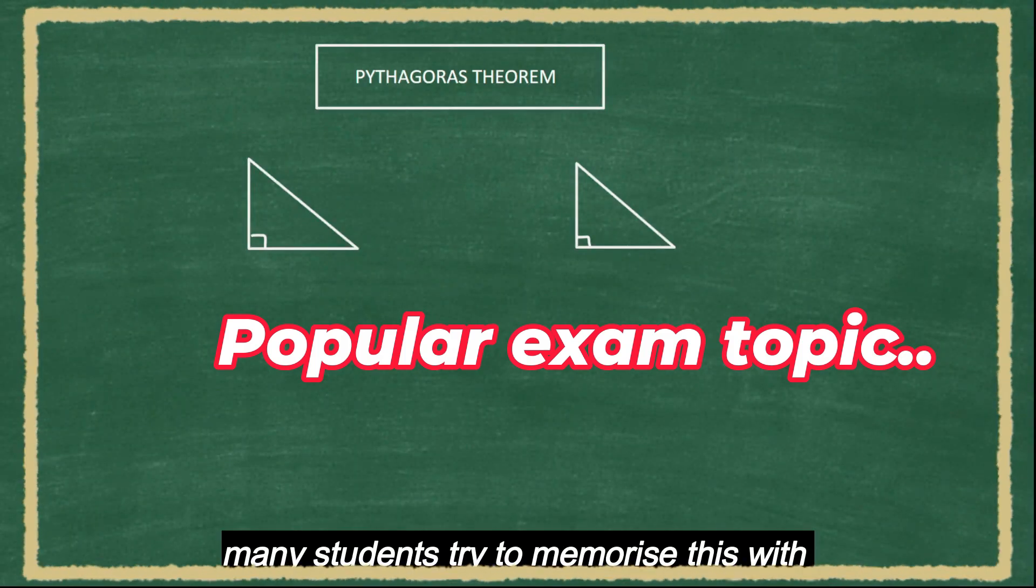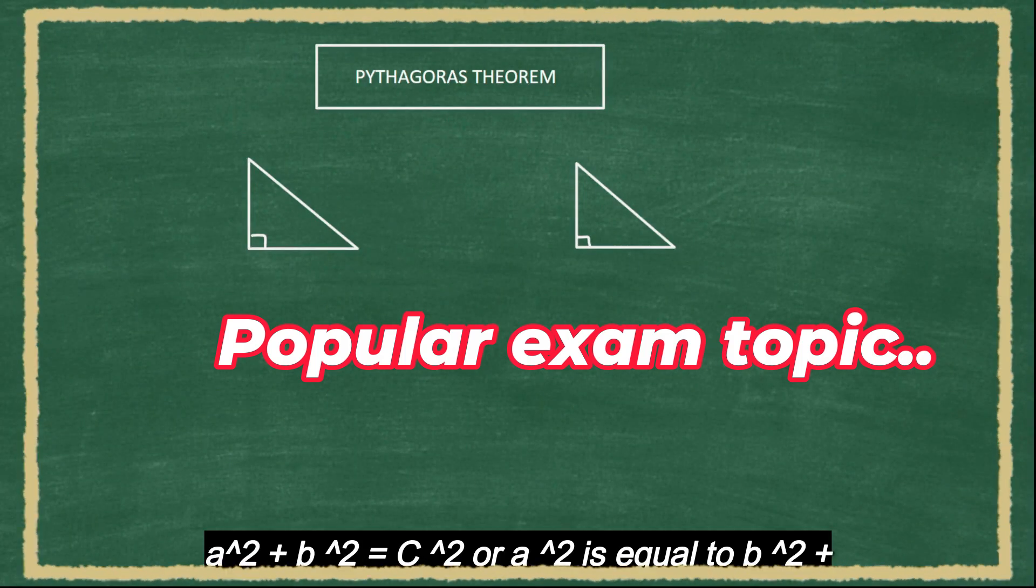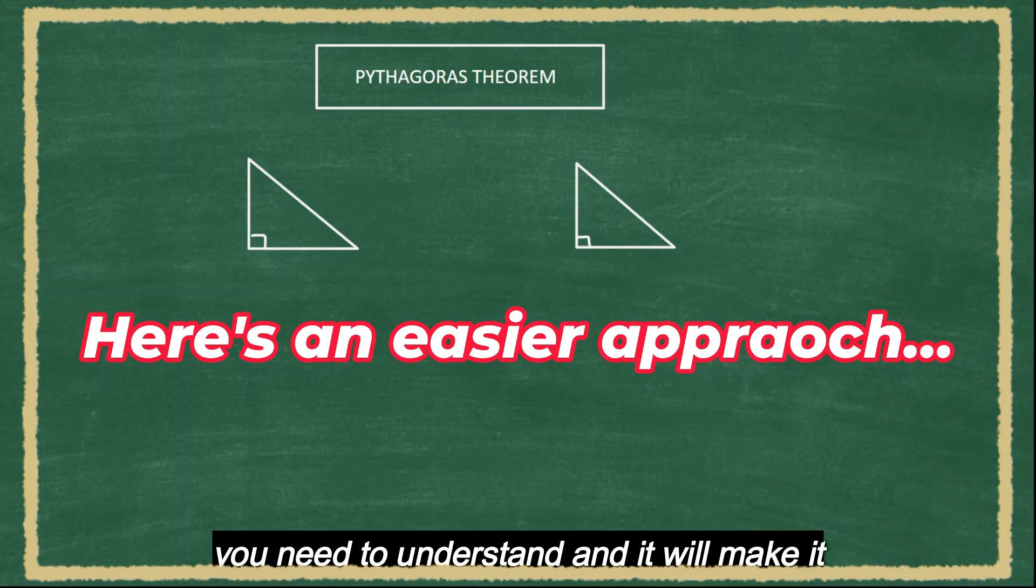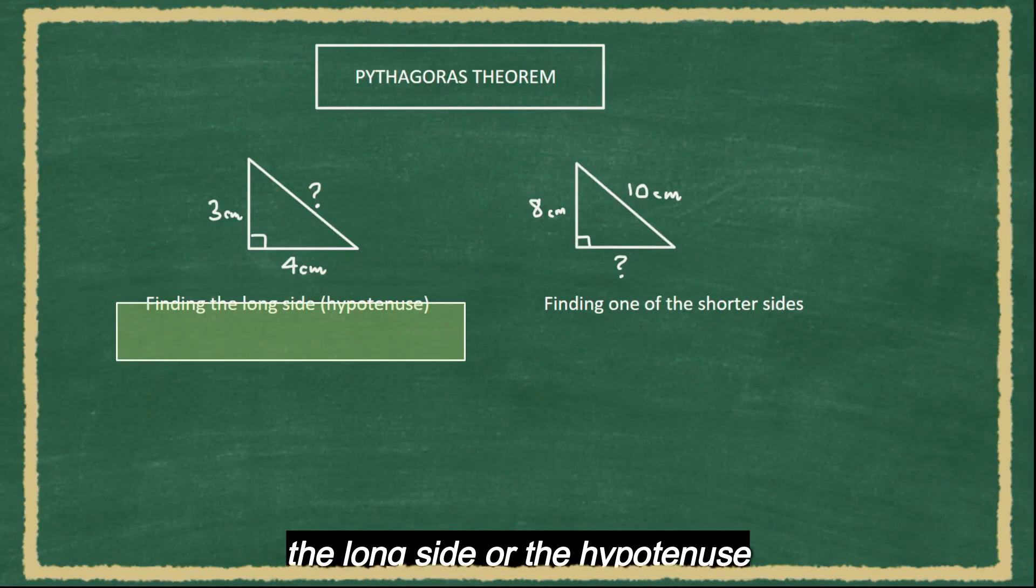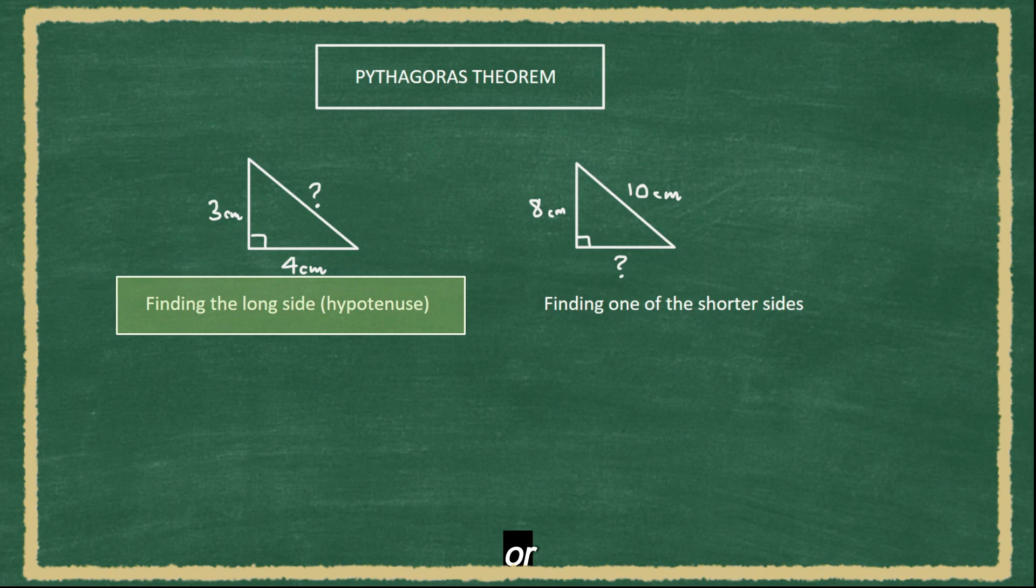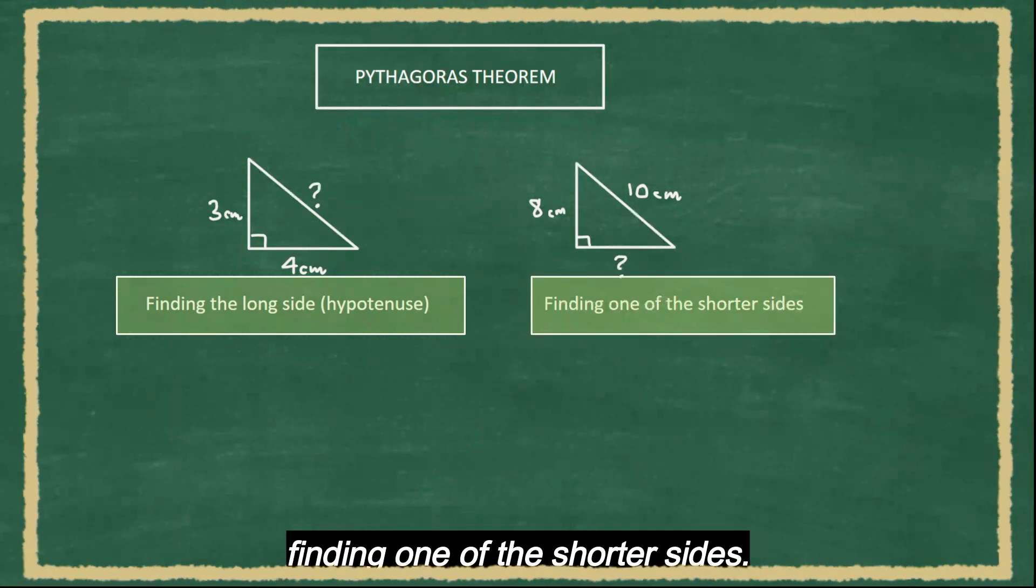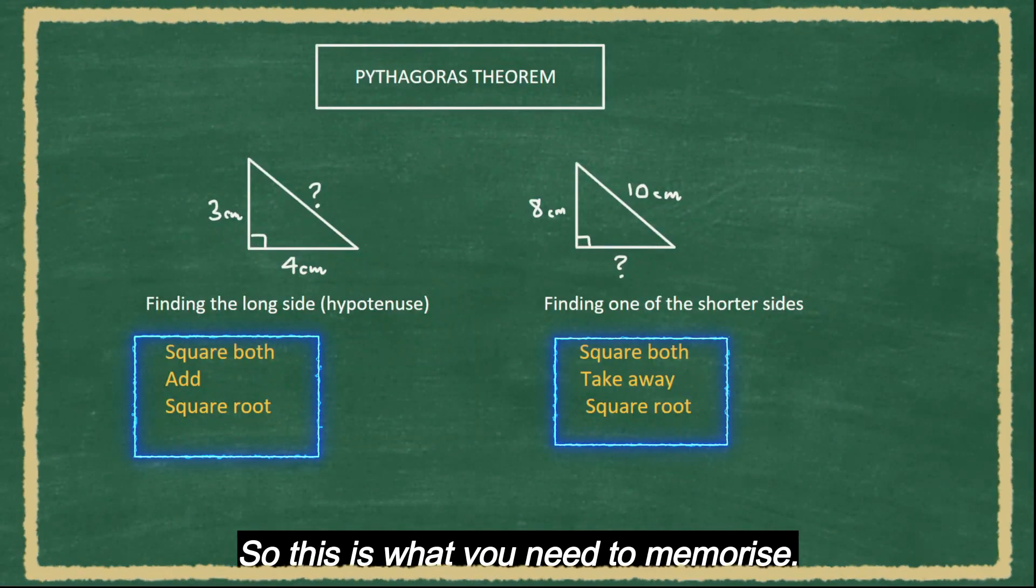Many students try to memorize this with a² + b² = c² and it will make it so much easier to do this question. Finding the long side or the hypotenuse or finding one of the shorter sides. So this is what you need to memorize.